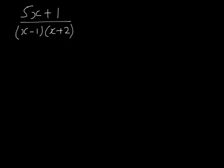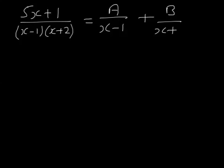Let's do this example. We know what the answer is because we've just seen it, but let's assume that we don't. We know that we can split it into something over (x minus 1) and something over (x plus 2). This is going to be an equivalence because it's true for whatever value of x. We multiply through the whole equivalence by (x minus 1)(x plus 2), so the left-hand side gives us 5x plus 1.